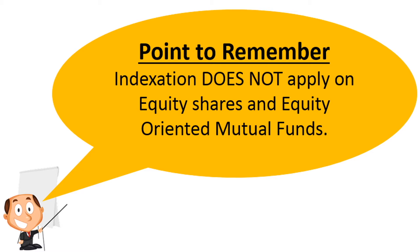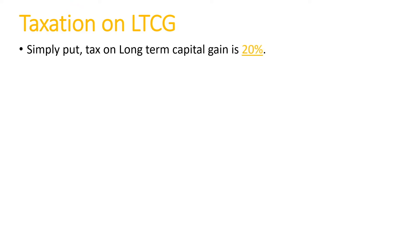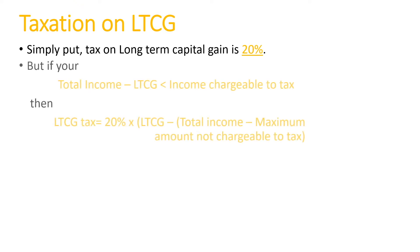We will cover how cost of acquisition is calculated for equity in the later sections. Now that we know how to calculate long-term capital gain, let's cover how the tax is calculated on this gain. Tax on long-term capital gain is a flat 20%. But if your total taxable income excluding LTCG is less than the income chargeable to tax, then you only need to pay capital gain tax on the portion of LTCG which exceeds the exemption limit.